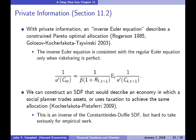Section 11.2 talks about private information and highlights that an inverse Euler equation describes a constrained Pareto optimal allocation, going back to the work of Rogerson in the mid-1980s. The inverse Euler equation is consistent with the regular Euler equation only when risk sharing is perfect — because the last term on the right-hand side is the expectation of a reciprocal of marginal utility, which equals the reciprocal of the expectation of marginal utility only when there is no cross-sectional uncertainty. This is an application of Jensen's inequality, showing the challenges in reconciling unrestricted trading in financial assets with schemes to share risk efficiently in the presence of private information. I also briefly discuss the work of Kocherlakota and Pistaferri on constructing a stochastic discount factor for an economy in which a social planner is trading assets to set up a constrained private information Pareto optimum.